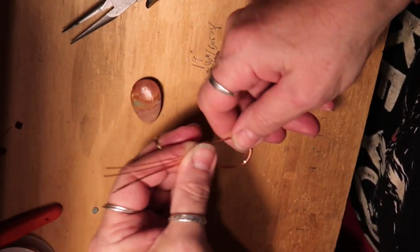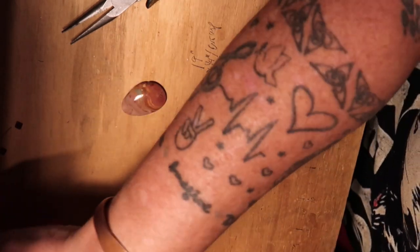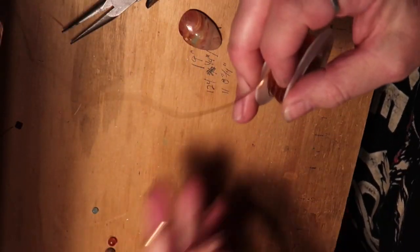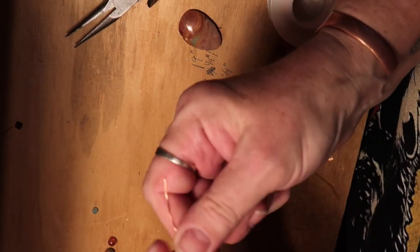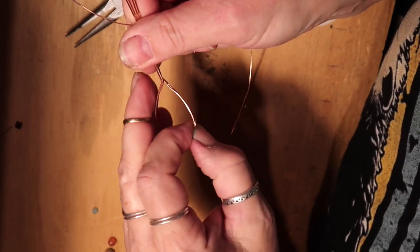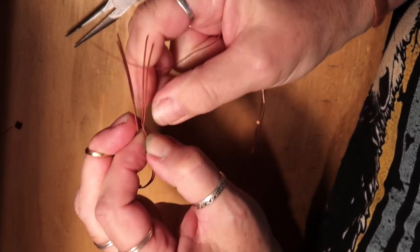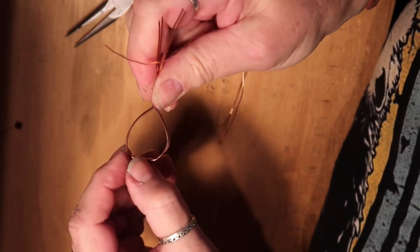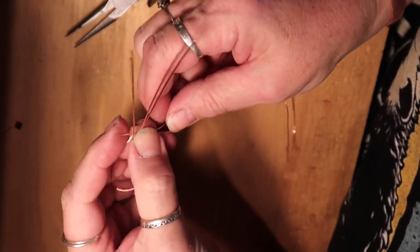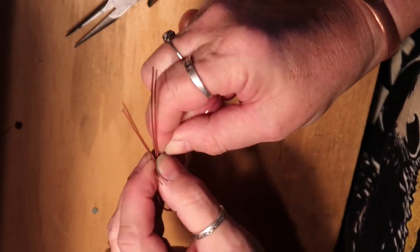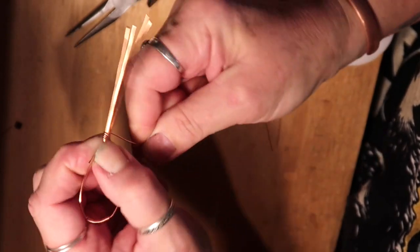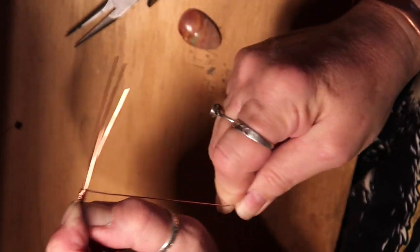So now what we want to do is take our 22 wire again and where you don't want these to crisscross, you want these to stay parallel to each other. You want to take your 22 gauge wire and just make several loops around the top to hold these four strands together. Just like that.